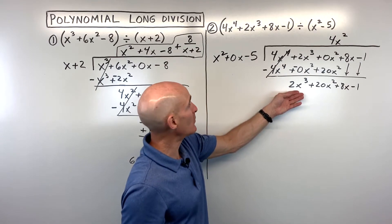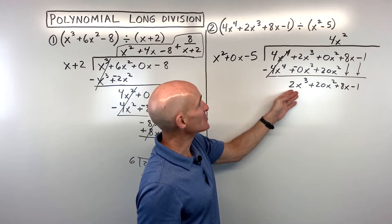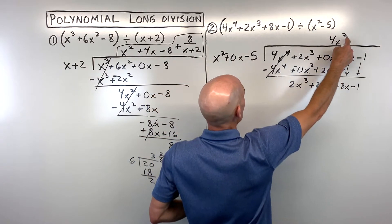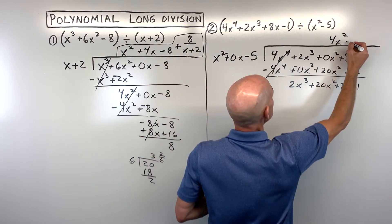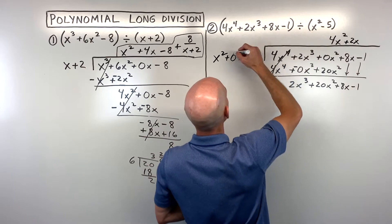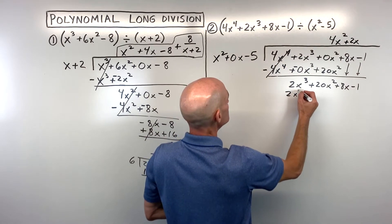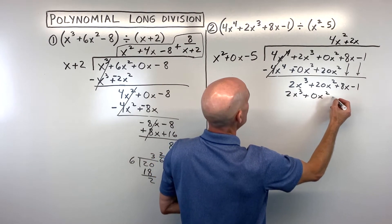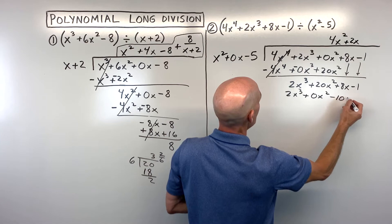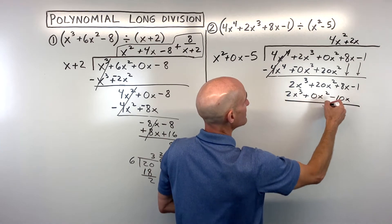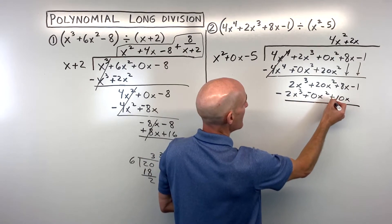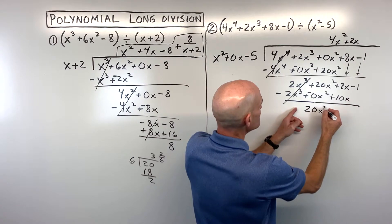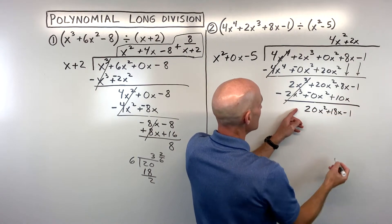Now we look at this first term again and say: what times x squared equals 2x cubed? That's going to be 2x. When we distribute, we get 2x cubed plus 0x squared minus 10x. We change the signs to the opposite and add — those first terms cancel — and we get 20x squared plus 18x minus 1.